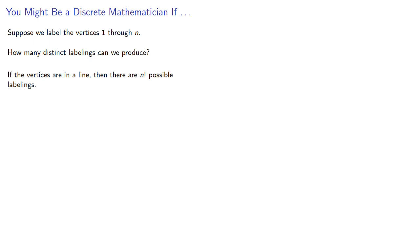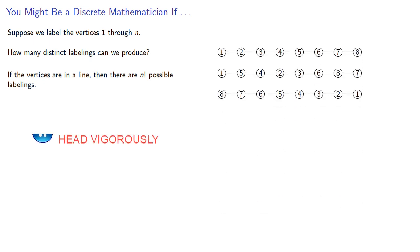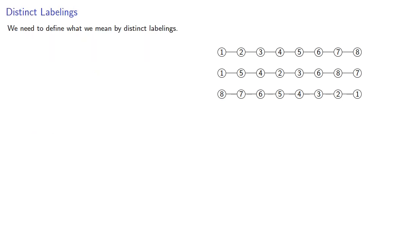Now, if the vertices are in a line, then there are n factorial possible labelings. Or are there? To answer that question, we need to define what we mean by distinct labelings. Cayley's idea, translated into modern terms, is that two labelings of a graph are the same if the same labeled walks appear in both.